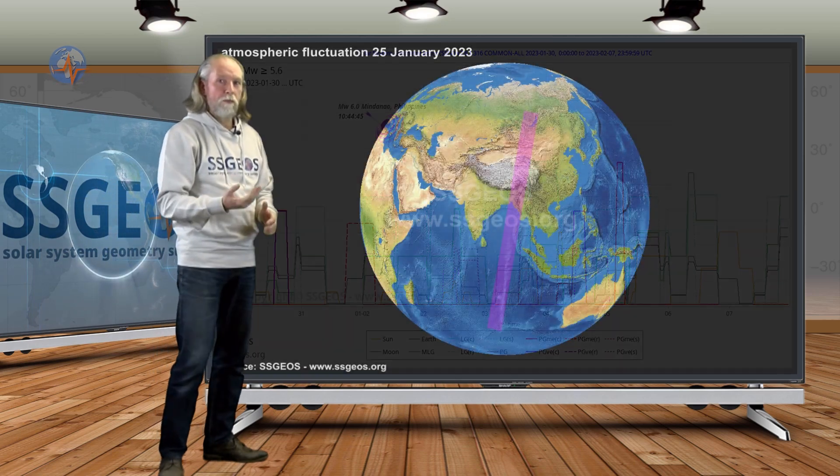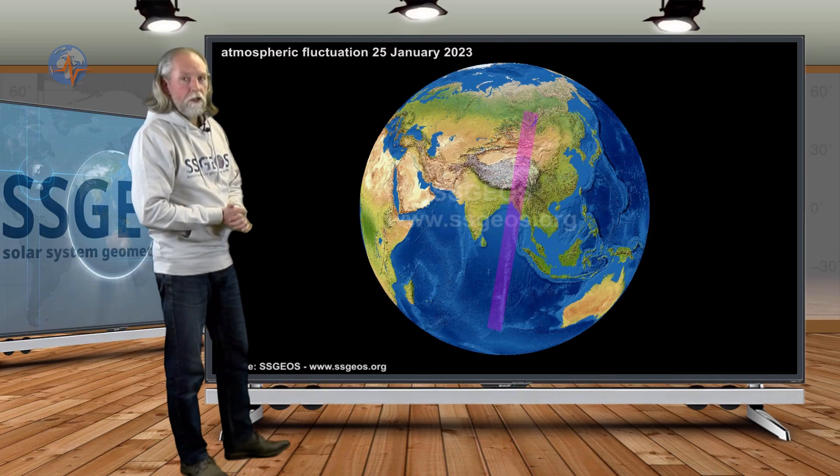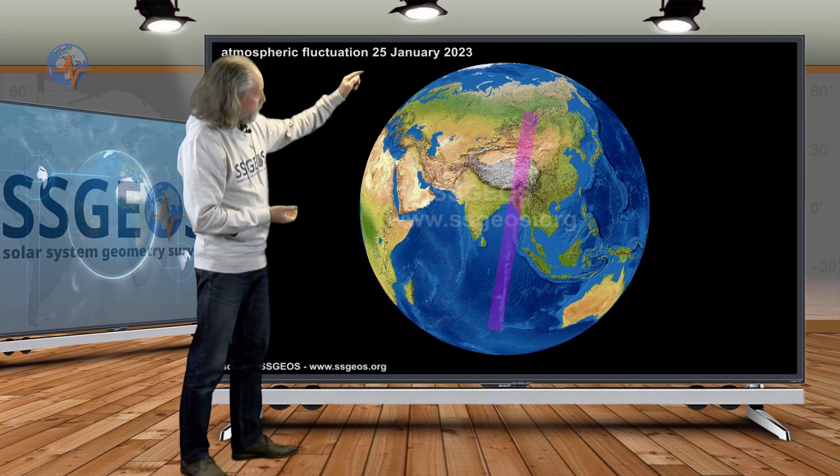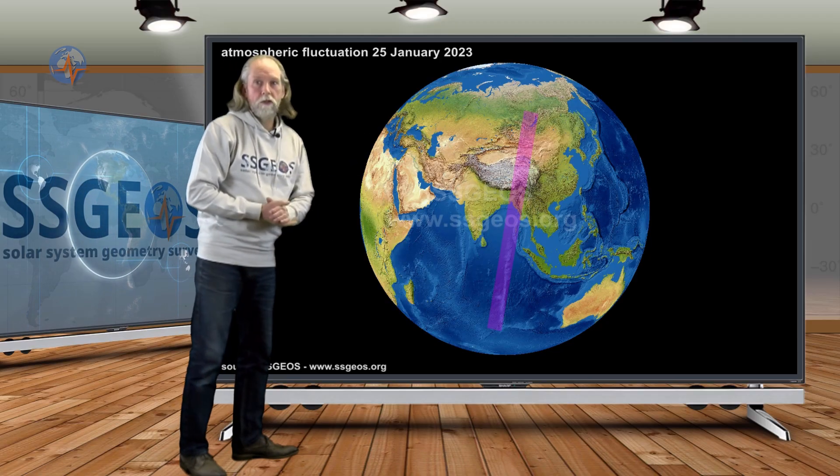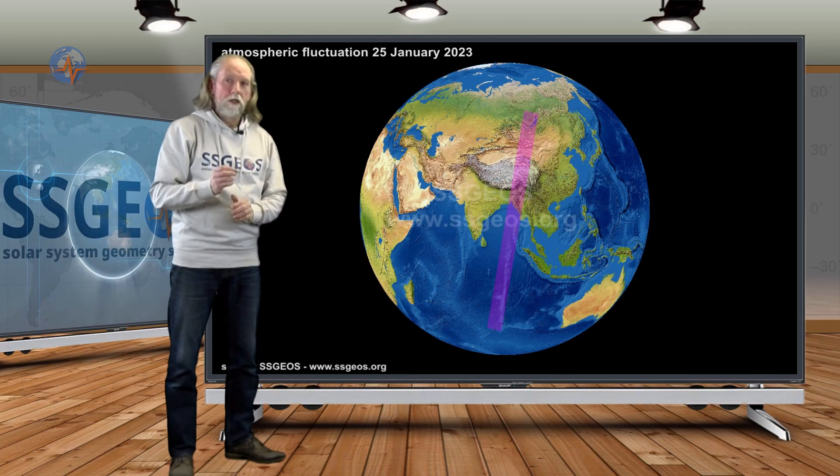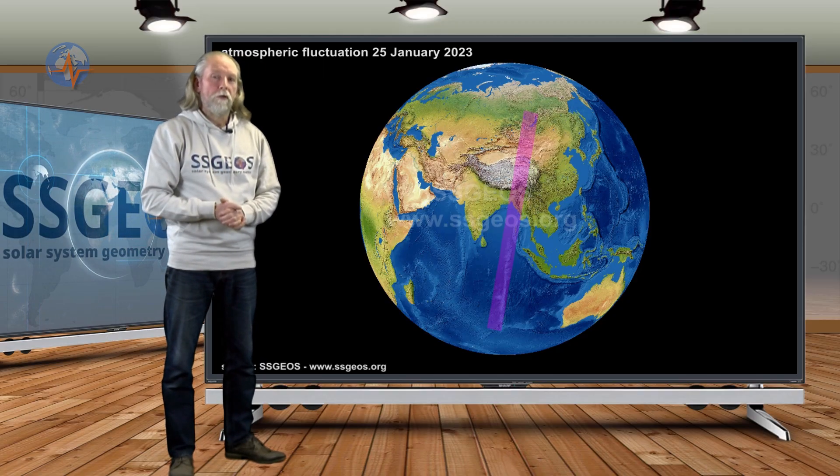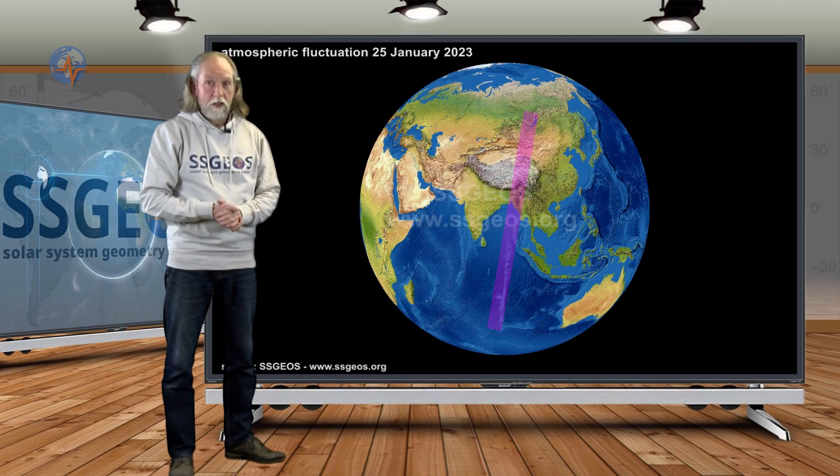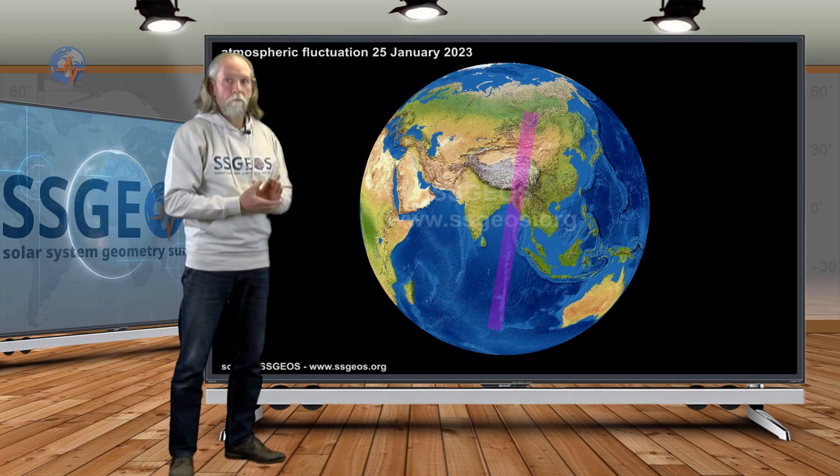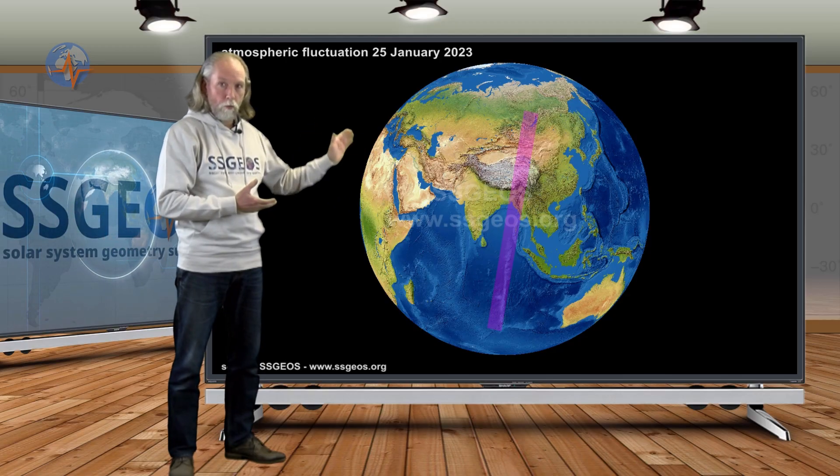It also happened a bit east of the fluctuation that we had earlier marking the regions of Asia from Lake Baikal in the north into the Indian Ocean, and that shows you that we cannot really be very accurate with those fluctuations. These are rough estimates and the increased seismic activity may occur to the east or to the west of the purple band.